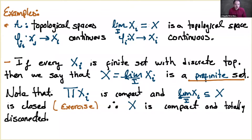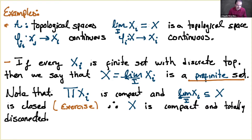Moreover, because this is a finite set and because of the product topology, one can also prove that this is compact and totally disconnected. This tells me that whenever I construct a topological space as a projective limit of discrete finite sets, I get a topological space which is compact and totally disconnected. In fact there are characterizations of compact totally disconnected sets which are related exactly to these projective limits.